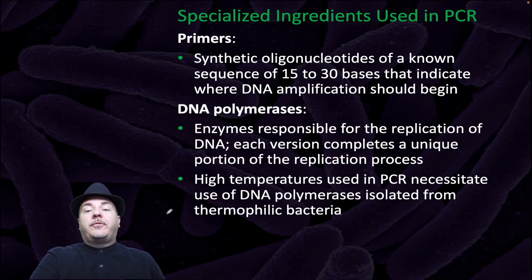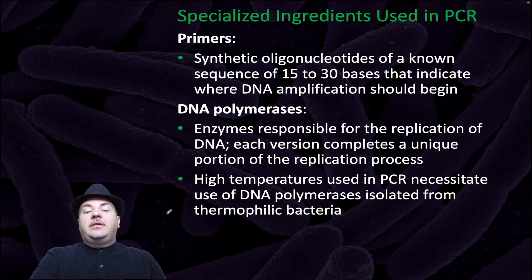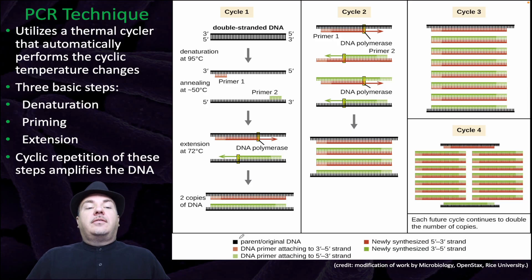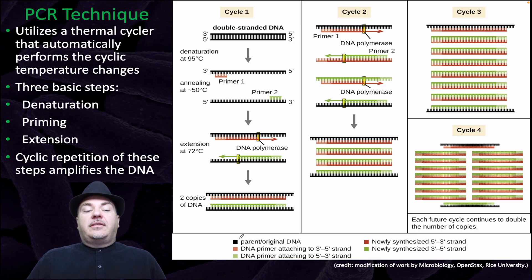Ingredients for PCR include primers, which are synthetic oligonucleotides of a known sequence of 15 to 30 bases that indicate where DNA replication should begin. Then we have DNA polymerases, which are enzymes responsible for the replication of DNA. The high temperatures used in PCR necessitate use of DNA polymerases isolated from thermophilic bacteria. PCR uses a thermocycler that automatically performs the cyclic temperature changes. The three basic steps are denaturation, priming, and extension. The cyclic repetition of these steps amplifies the DNA.